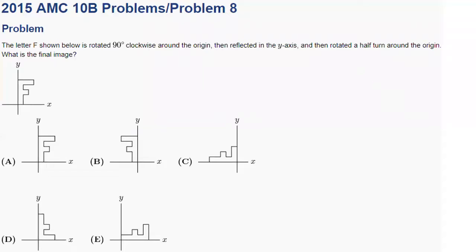We will be taking a look at the 2015 AMC-10B problem number 8. The letter F shown below is rotated 90 degrees clockwise about the origin, then reflected in the y-axis, and then rotated a half turn around the origin. What is the final image?